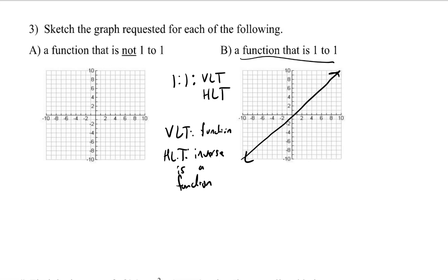A function that is one-to-one passes the vertical and horizontal line test. Part a is a little tricky in that it has to be a function, so it has to pass the vertical line test, but then not be one-to-one. Something like y equals x squared is certainly a function, but since it doesn't also pass the horizontal line test, it is not one-to-one.